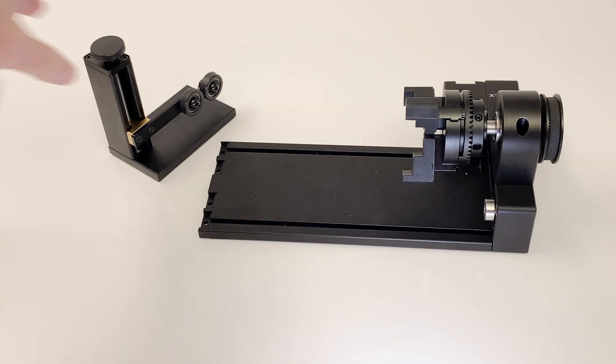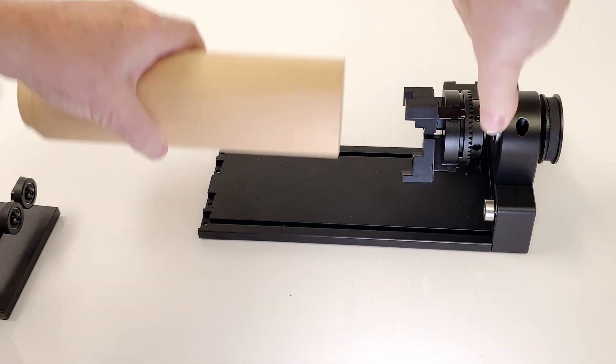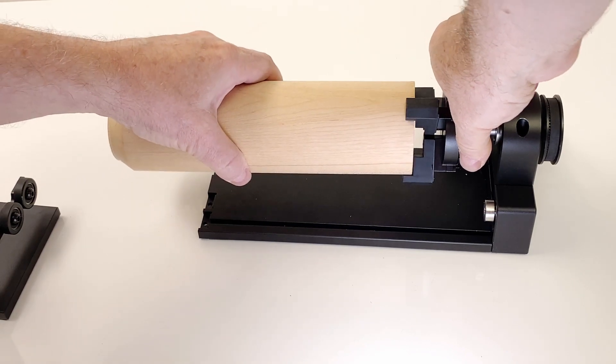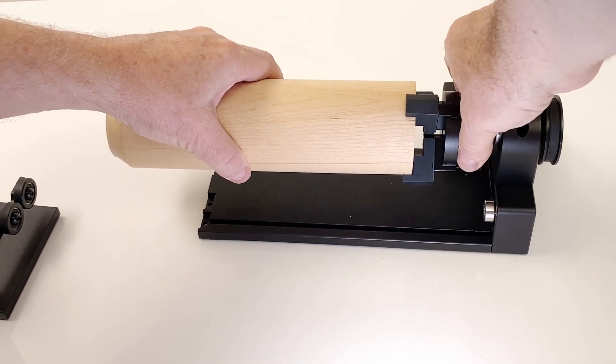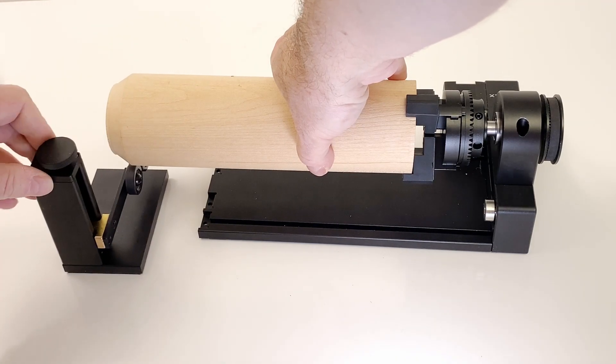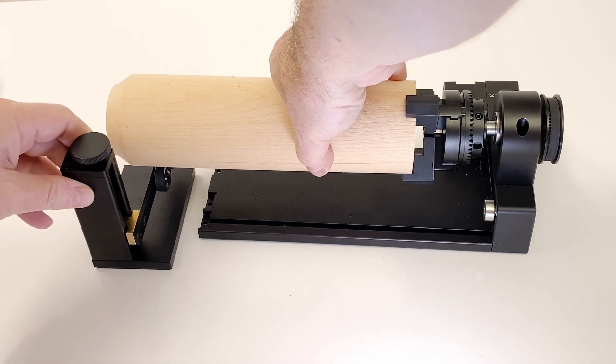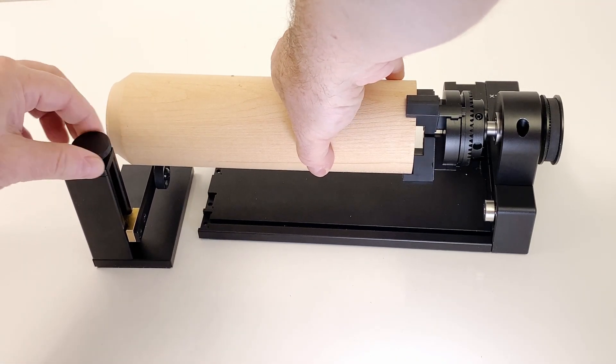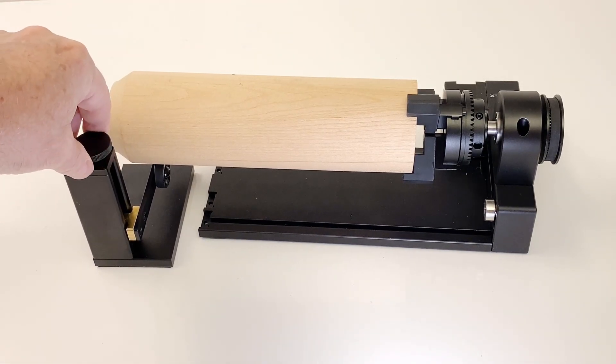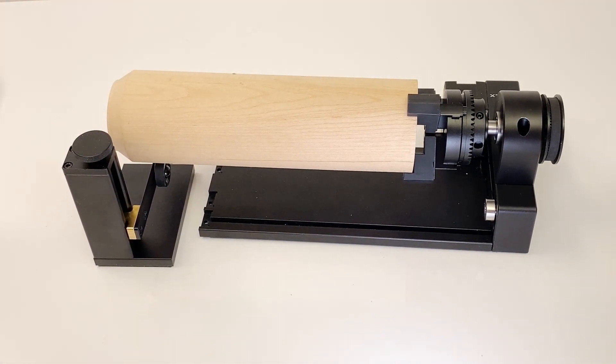Similar to using the tail module, it's generally a good idea to support the far end of an item gripped in the chuck. So the next tip is a reminder to use the support module where possible. The height of the module is easily adjusted so the end of the workpiece rides on the two bearings and the weight is distributed.